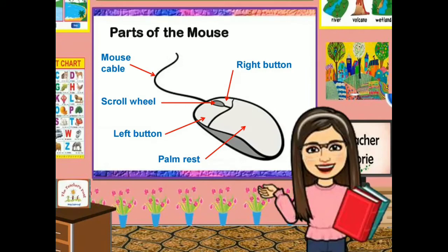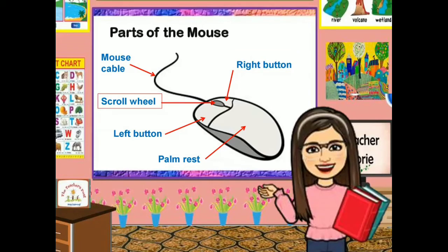These are the parts of the mouse. This is the mouse cable. This is the right button. This is the scroll wheel. This is the left button. And this is the palm rest.